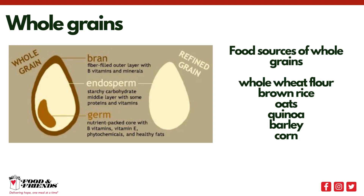Refined grains are grains where the germ and bran are removed, leaving only the starch without the fiber, vitamins, and minerals. Refined grains are often enriched during processing, which adds back some of the vitamins and minerals that were removed, along with the fiber. Whole grains include whole wheat, brown rice, oats, quinoa, barley, and corn.